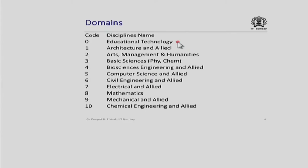Why have we added domain 0? There may be some teams which, instead of working on a specific area of engineering, science, or architecture, wish to work generically on the use of educational technology — it could be related to pedagogy or any educational technology activity. If they wish to do that, they should identify themselves as working for domain code 0. You may choose any domain for today's activity, though we would prefer that your team sticks to a particular domain for the rest of the work.